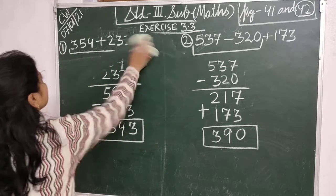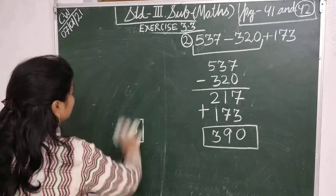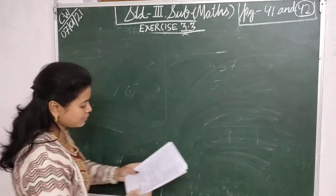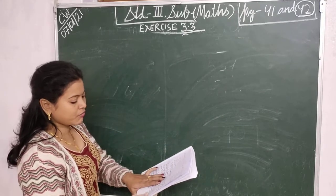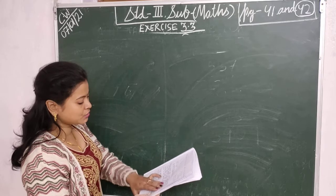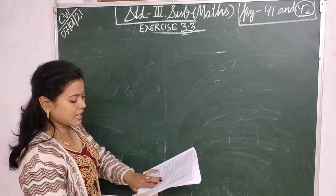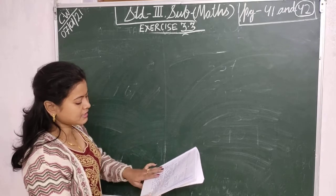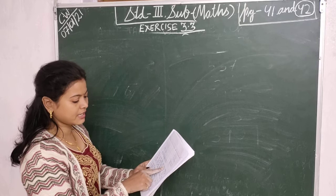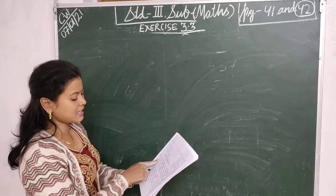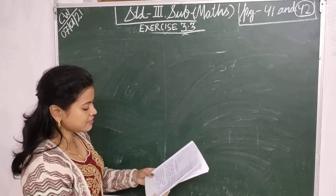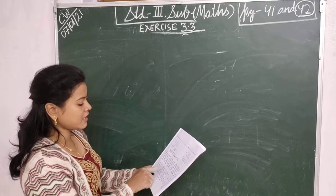Children, I am going to show you a word problem that will help you to do the whole exercise. So your question is: In a school there were 2,446 children. 359 new children were admitted into the school and 267 children left the school during the year. How many children were there in the school at the end of the year?